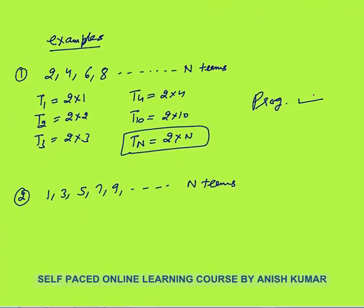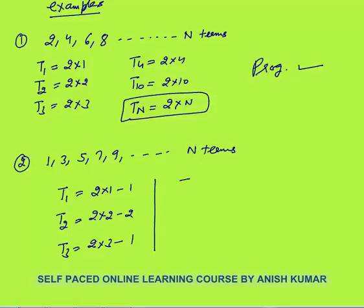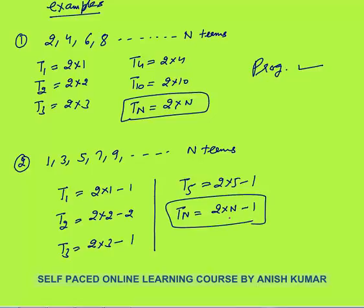For the second sequence 1, 3, 5, 7, 9 up to nth terms — is it a progression? The first term is 1, which is 2×1−1. The second term is 2×2−1. The third term is 2×3−1, that is 5. The fifth term is 2×5−1, that is 9. The nth term will be 2n−1. Again, we can find the nth term, so this is also a progression.